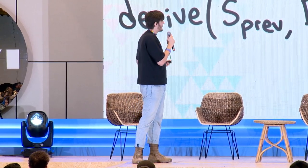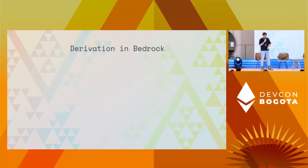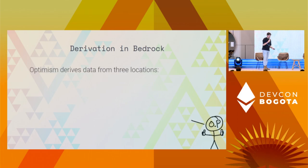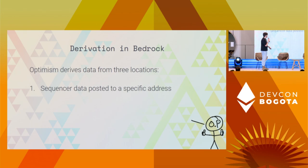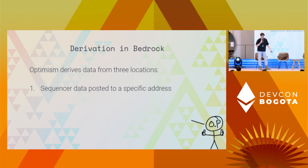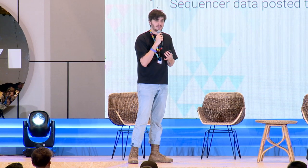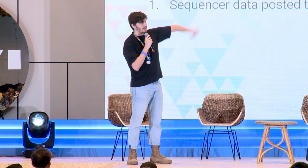Let's formalize this. The derivation function has a relatively simple signature: it takes the previous state of your rollup and the data availability layer, and it's either going to produce a payload for you to execute on the execution layer, or produce nothing. It might produce nothing if you're a rollup and there just haven't been any new transactions published to layer one — it looked at the new block and there's nothing new to put into the rollup.